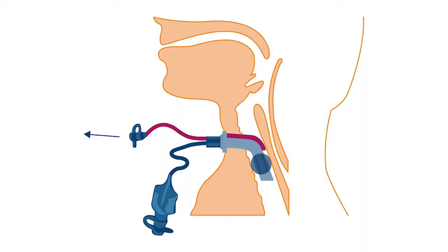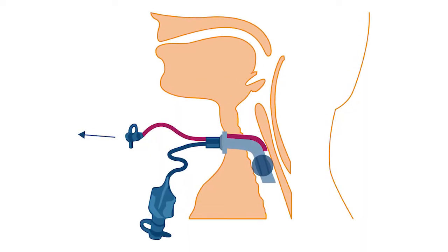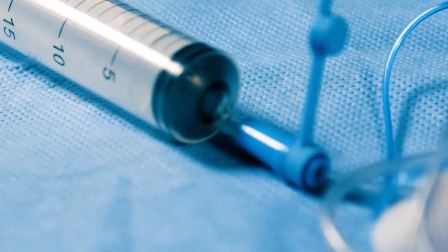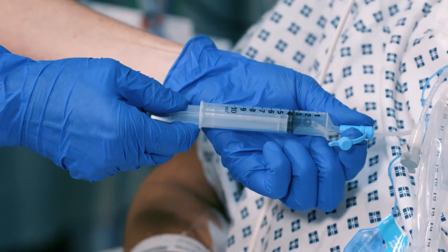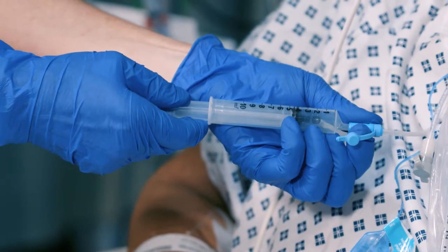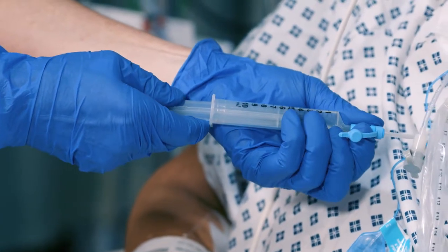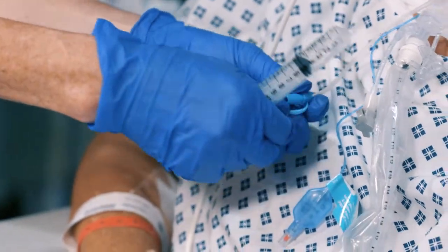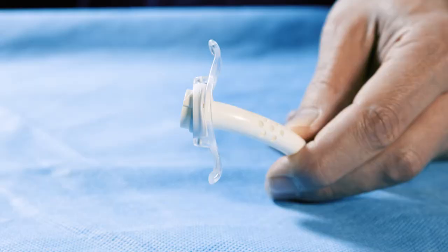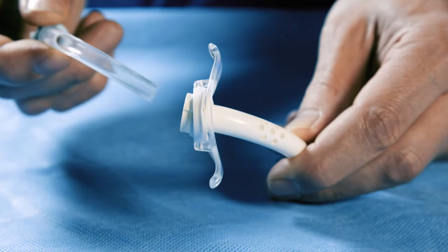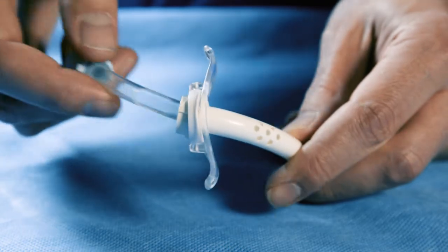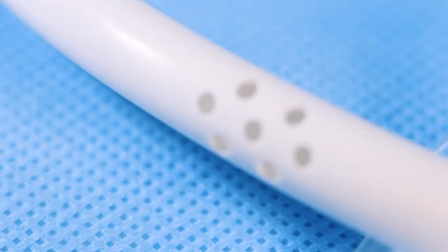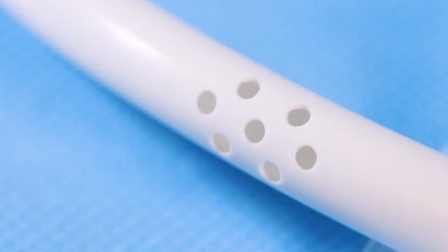Some tubes have special functions. One of these would be subglottic suction, which is an additional port that allows us to aspirate secretions that can build up above the cuff and potentially cause pneumonia. Another would be fenestrations in the top of the tube, which can allow extra airflow through and improve a patient's speech.